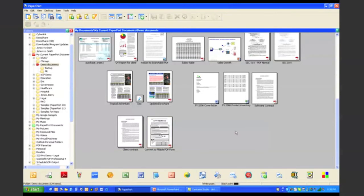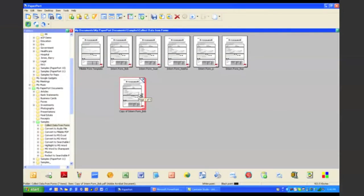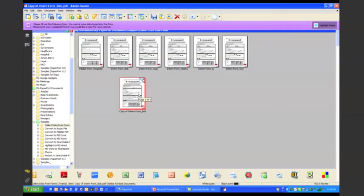What we also allow you to do is take existing forms and collect data from those forms. So let's say I actually have a form, and I had several people fill out this form for me — maybe four different versions of this form. Now I want to emphasize that they would have had to have filled it in using typed text. It will not recognize handwriting; it will only recognize typed, machine-printed text. What I can do is take those hard copy forms, scan them in through my Xerox device, and Scan to PC Desktop will actually collect the data from that form and save it out into a CSV file — a comma-separated value file that can be opened up in Microsoft Excel.